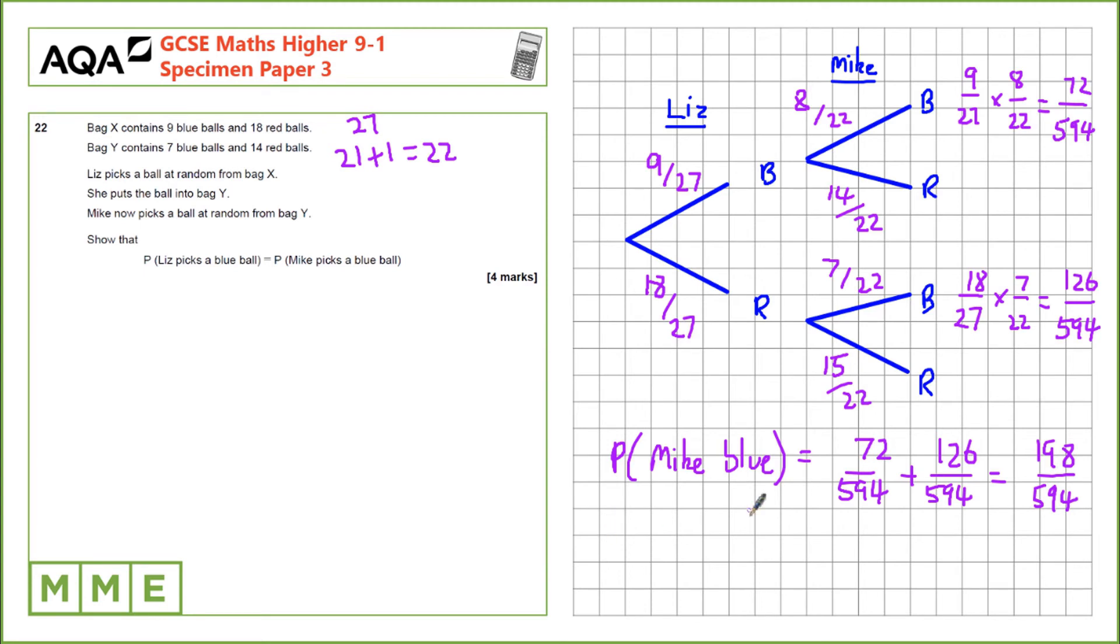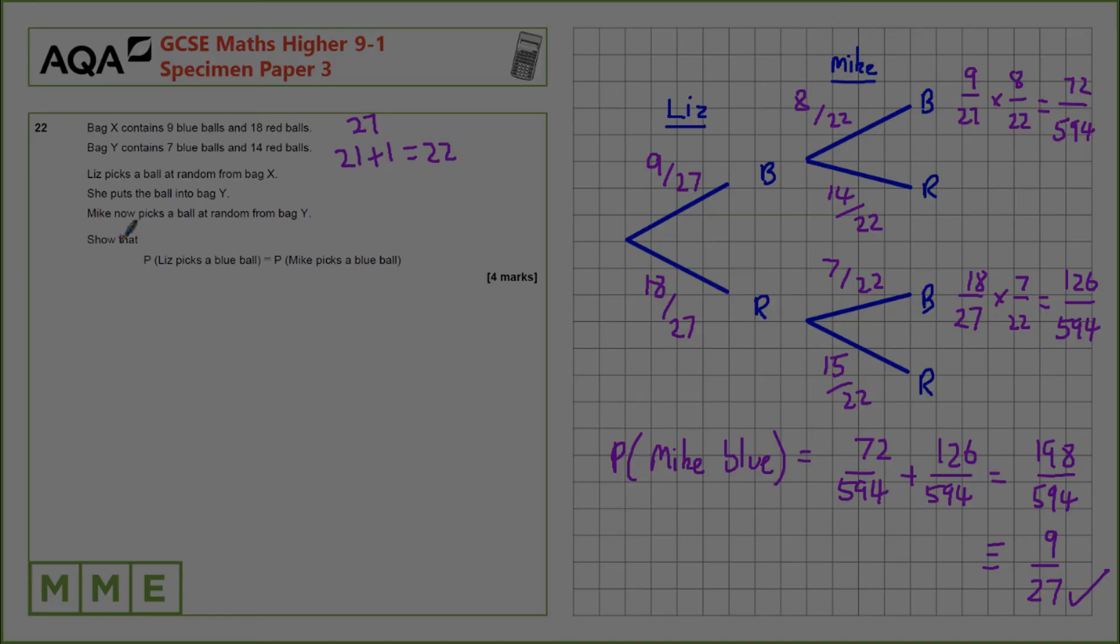This cancels down to 9 over 27 or one third. So we can say that it's the same as the probability that Liz picks a blue which is 9 over 27, and we have proved what we are required to show.